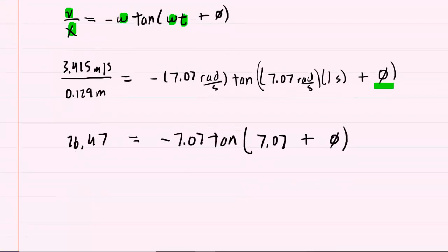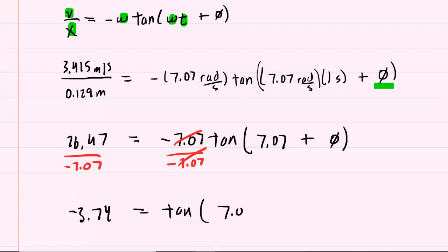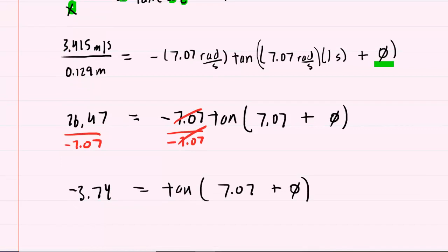Next, we will divide both sides by negative 7.07, so that these would cancel. On the left side, you'll get about negative 3.74. This will equal the tangent of this quantity. Next, in order to cancel out the tangent, you actually must take the inverse tangent on both sides of the equation.